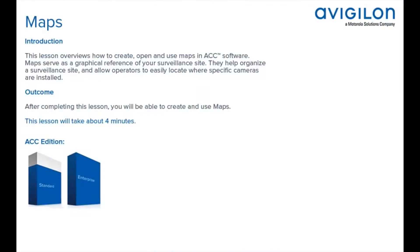This lesson overviews how to create, open, and use maps in ACC software. Maps serve as a graphical reference of your surveillance site — they help organize a surveillance site and allow operators to easily locate where specific cameras are installed. After completing this lesson, you'll be able to create and use maps. This feature is available in select editions of ACC software.